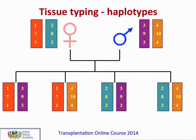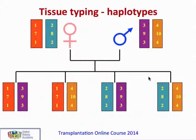We all inherit different HLA molecules from our parents, as shown in this example. The mother may have one type of HLA molecule — for example, an HLA-A, an HLA-B molecule and an HLA-DR molecule — and she will give half of her offspring one type and half the other type. This complete type is called a haplotype. The father will also have two different types of HLA molecule and will give half of the offspring one type and half the other. This means that among siblings, the chances of having exactly the same haplotypes are approximately one in four.